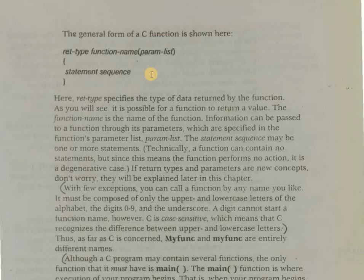The function name is the name of the function. Information can be passed through a function through its parameters, which are specified in the function's parameter list.